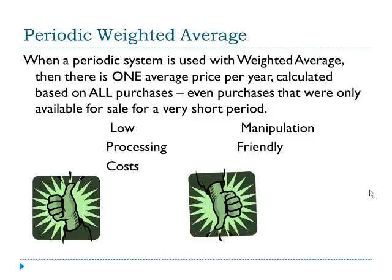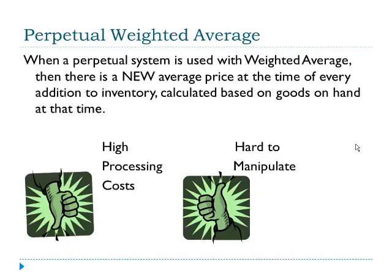In a periodic weighted average system, there is one average price per year calculated based on all purchases, even purchases that were only available for sale for a very short time. This method tends to have low processing costs but is subject to some manipulation. In a perpetual weighted average system, there is a new average price at the time of every addition to inventory based on goods on hand at that time. This tends to have high processing costs, but it is much harder to manipulate.